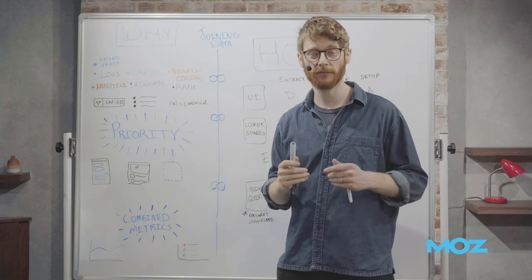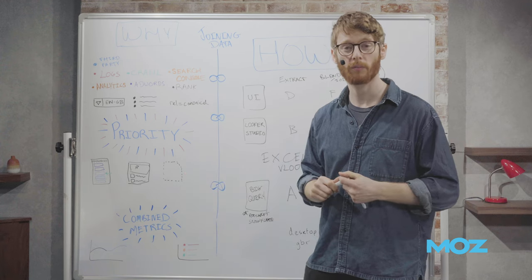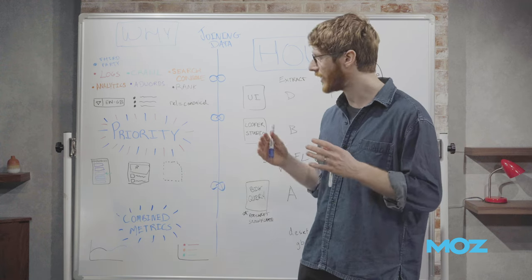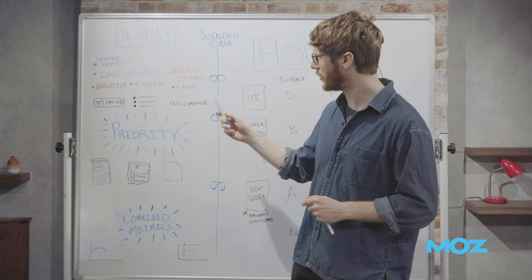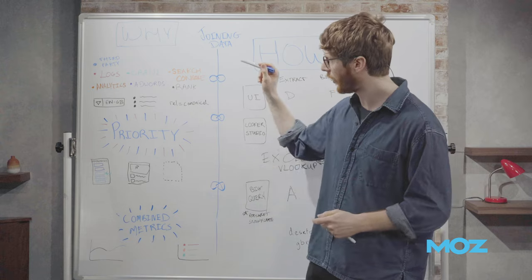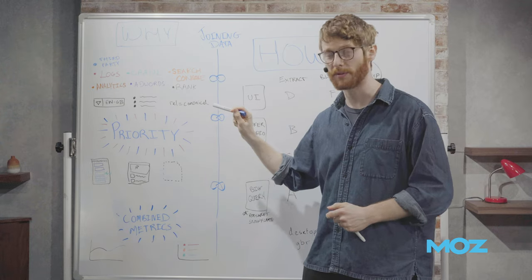A quick bit of background on myself, I'm Dominic. I run Piped Out. We're a service that helps SEO teams and marketing teams handle their data problems. And a lot of what we do looks something like joining these things together. So that's my sort of background for talking to you today. And hopefully what I can do is inspire you to go out and do this for your own website.